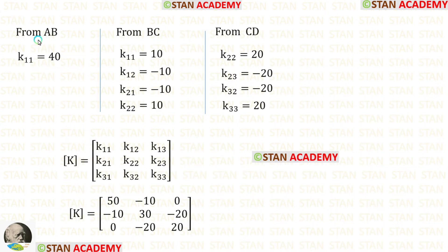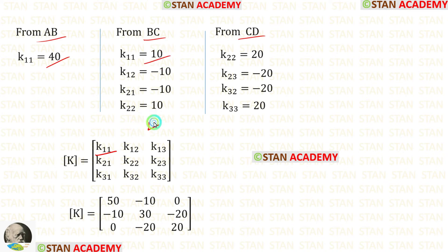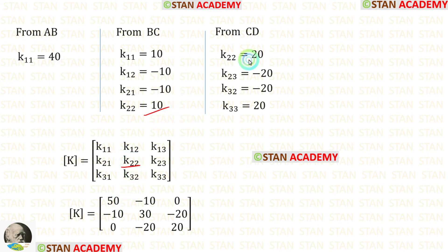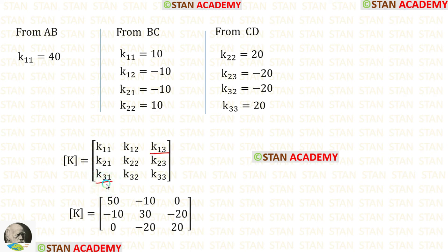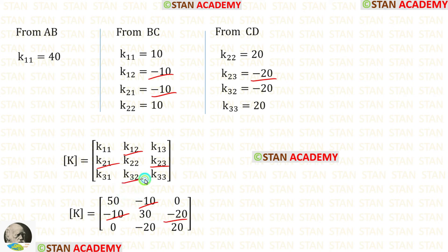We have found the stiffness matrix elements from AB, BC, and CD. Now let us make the global stiffness matrix. For K11 we have got two values and we have to add both of them. For K22, 10 plus 20 gives us 30. For K13 and K31 there is no value, so we apply 0. K12 is minus 10, K21 is minus 10, K23 is minus 20, K32 is minus 20, and finally K33 is 20.